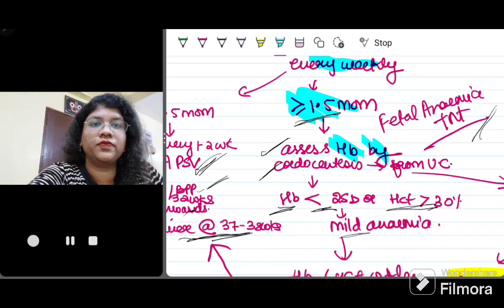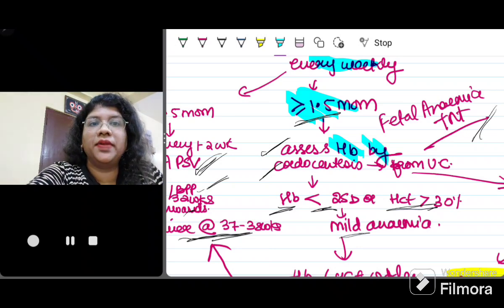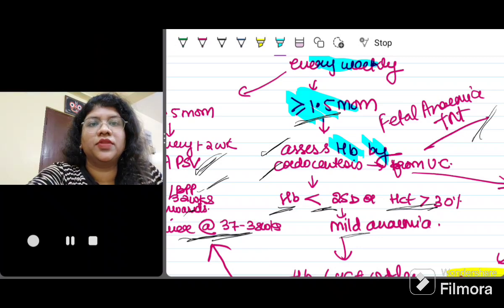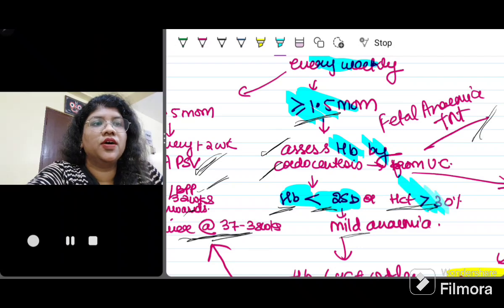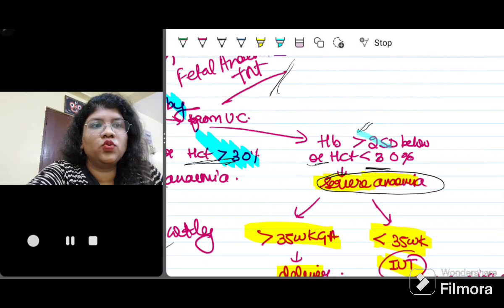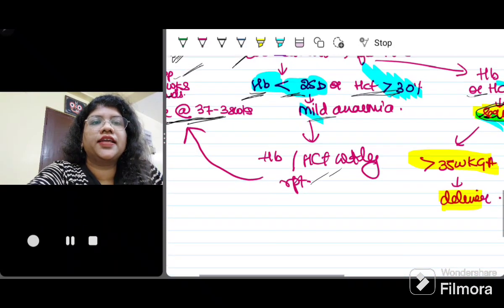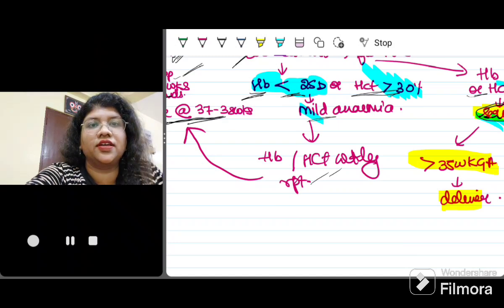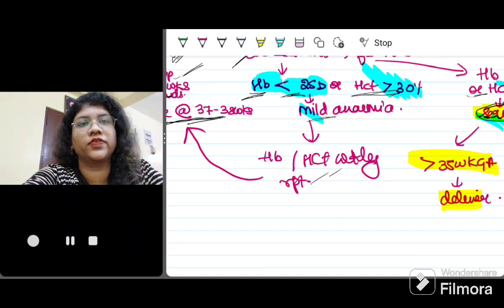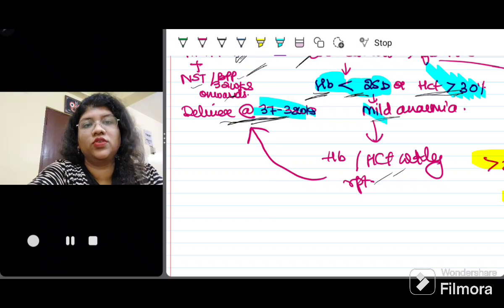So I am going to do a hemoglobin of the fetus by doing cordocentesis through the umbilical vein. It is done from the intrahepatic portion of the portal vein of the fetus. If hemoglobin is less than 2 standard deviation or hematocrit is more than 30%, then it is called mild anemia. If it is more than 2 standard deviation below or hematocrit is less than 30%, it is known as severe anemia.